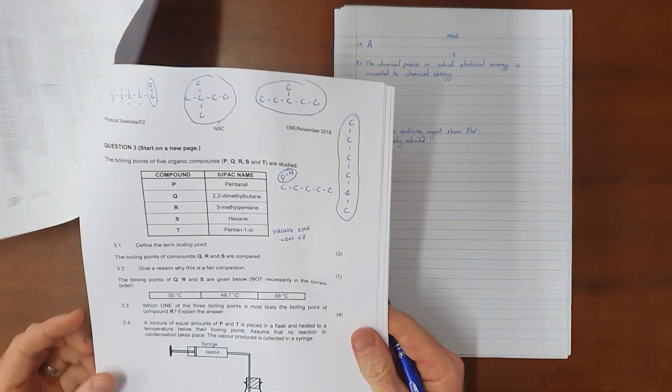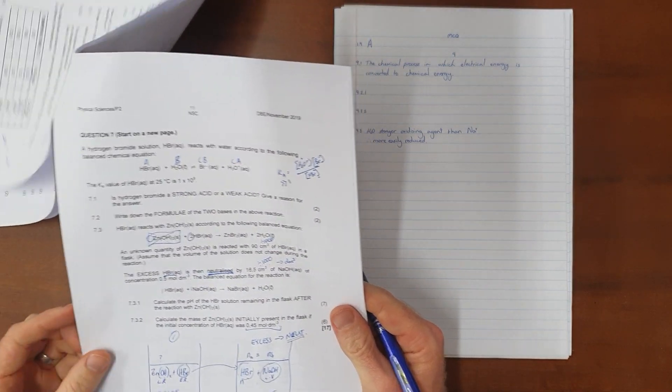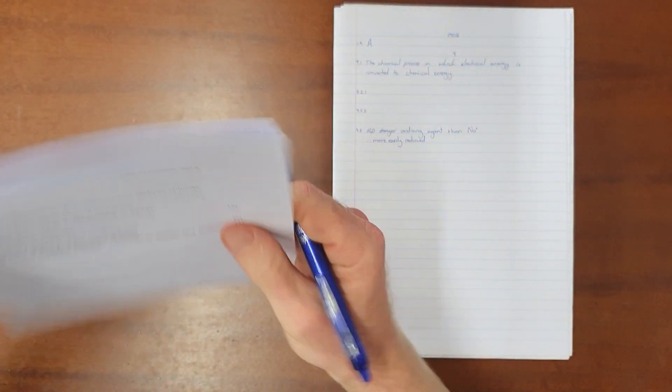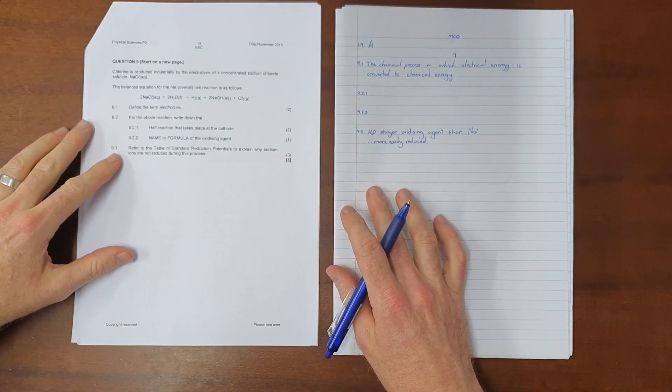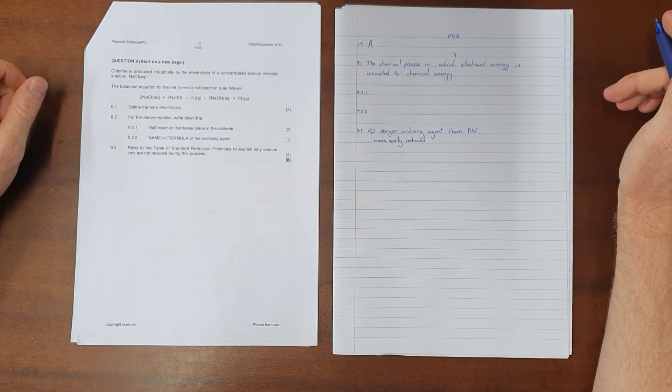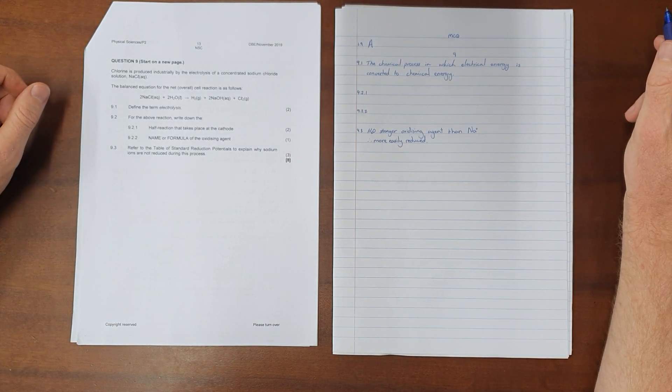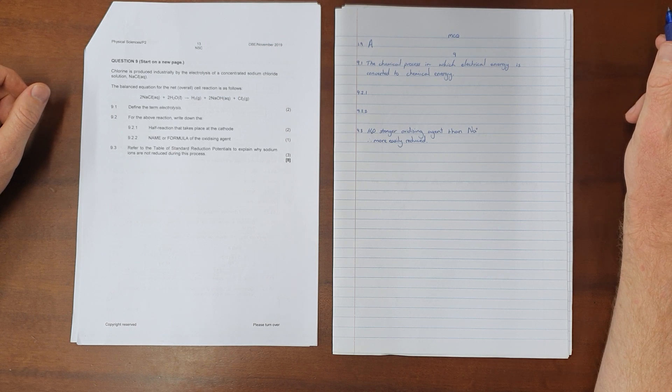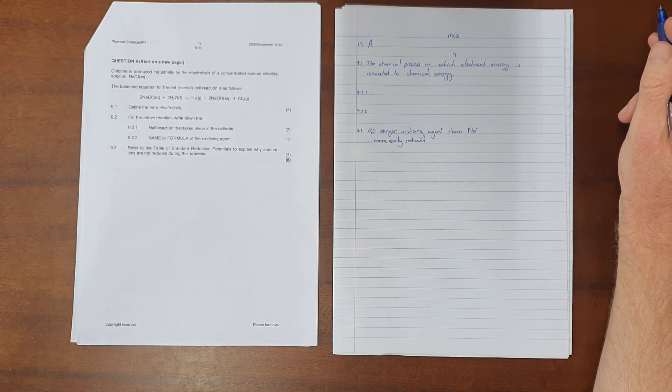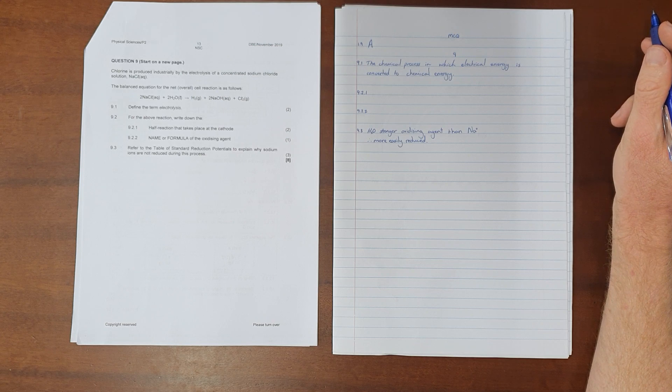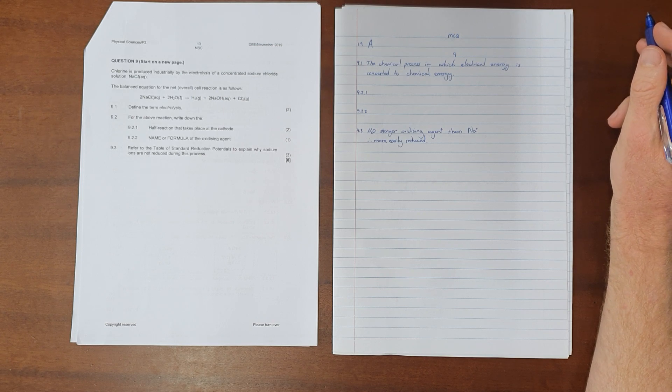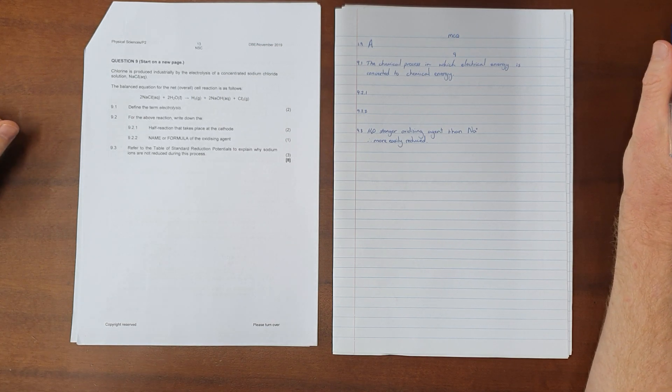The remaining question on electrolysis is always going to be question 9 in this paper, which reads as follows. Chlorine is produced industrially by the electrolysis of a concentrated sodium chloride solution, NaCl. The balanced equation for the net or overall cell reaction is as follows.